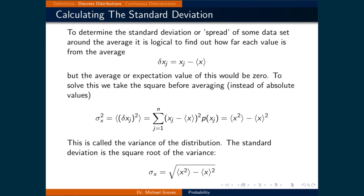To determine the standard deviation, or spread of a data set around the average, we find how far each value is from the average. This is defined as delta x sub j equals the value minus the expectation value. However, the expectation value of delta x would be zero, so we take the square before averaging. Sigma squared equals the expectation value of delta x_j squared, which can also be written as the expectation value of x_j squared minus the expectation value of x_j, all squared. Sigma squared is called the variance; the standard deviation is simply the square root of the variance.